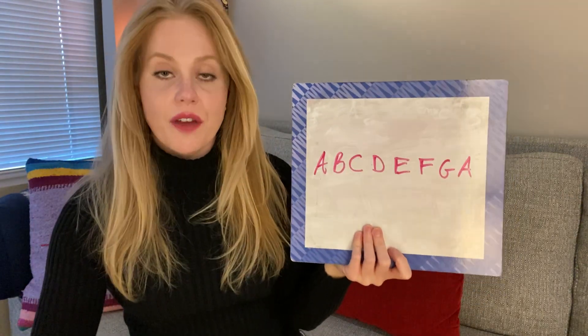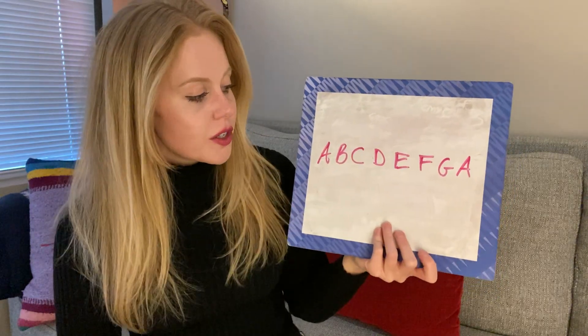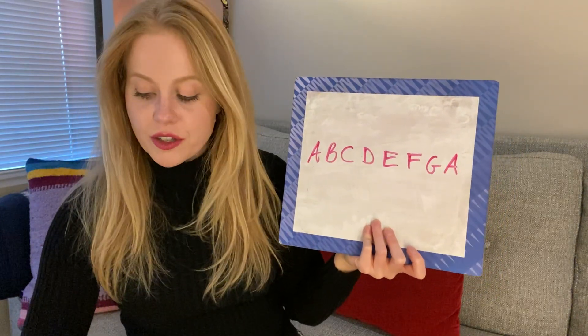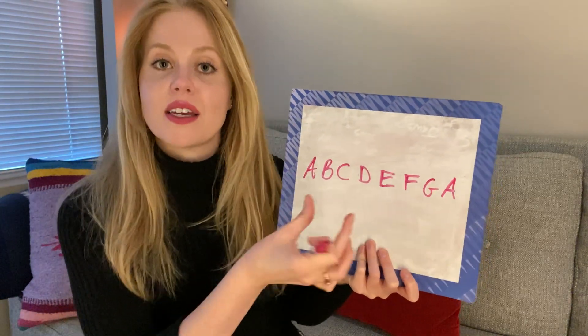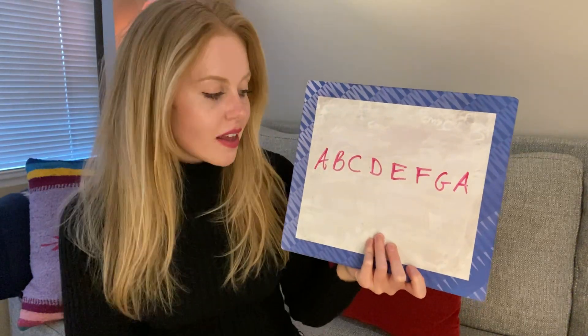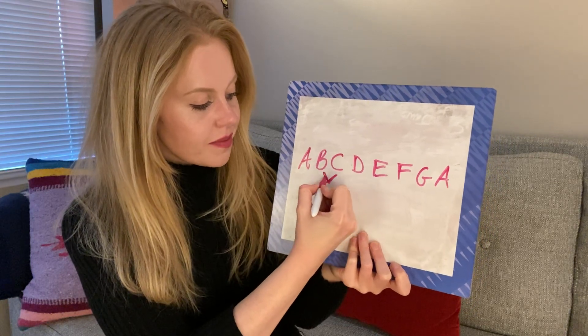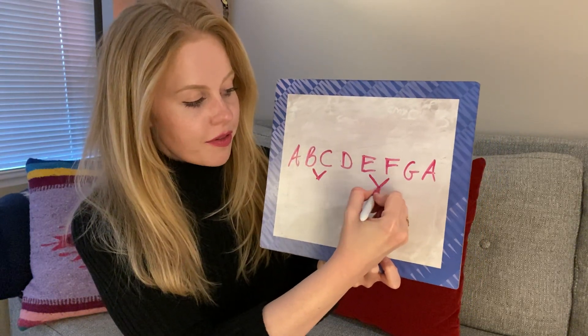So in music we have natural notes, which on the piano would be the white keys, and we have the black keys. Before we put in the black keys, I just want to show you that there are two places where we don't have a black key in between. The first place is between B and C, and the second place is between E and F.